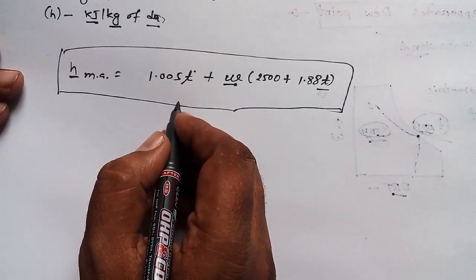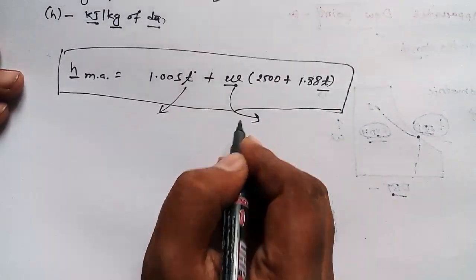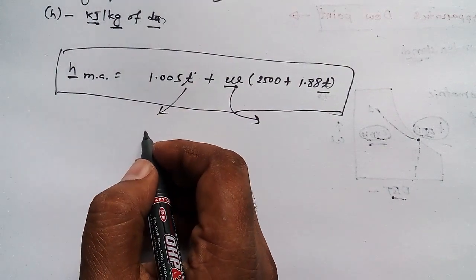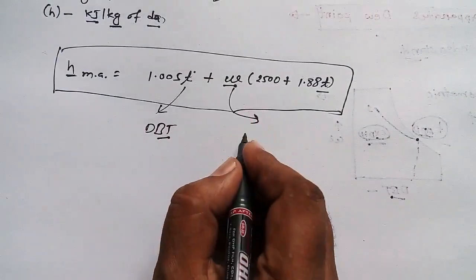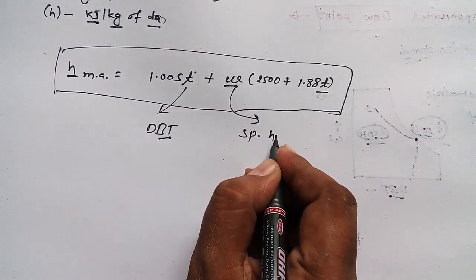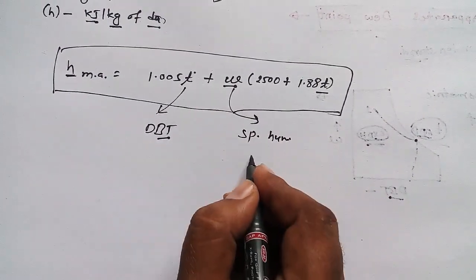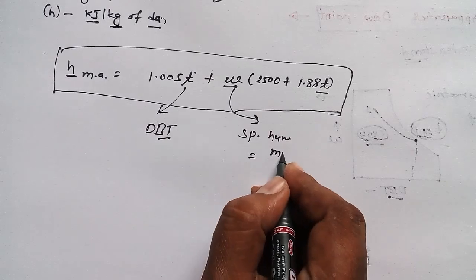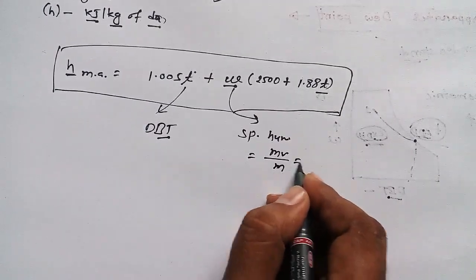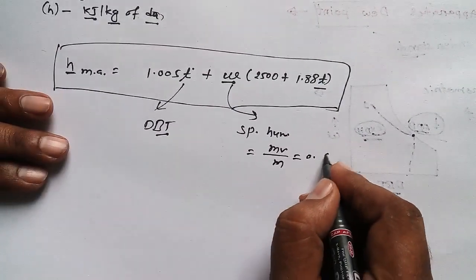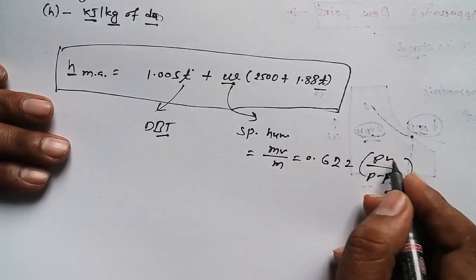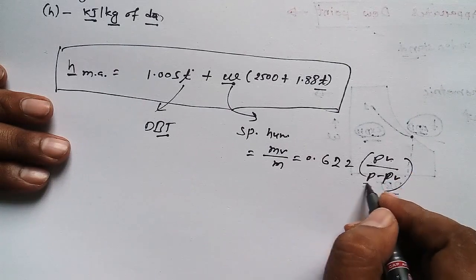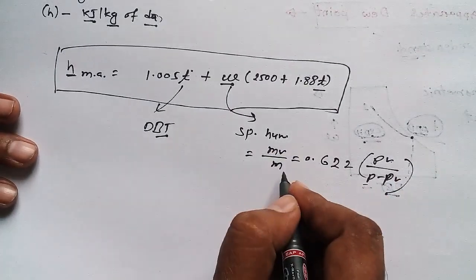Let me discuss what we need to find enthalpy of moist air. T means dry bulb temperature. Omega is specific humidity or humidity ratio, which equals mv/ma = 0.622 * pv/(p - pv), where pv is water vapor pressure and p is total pressure. DBT means dry bulb temperature.